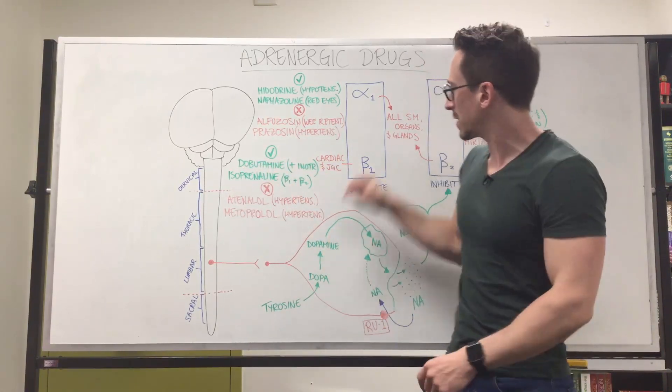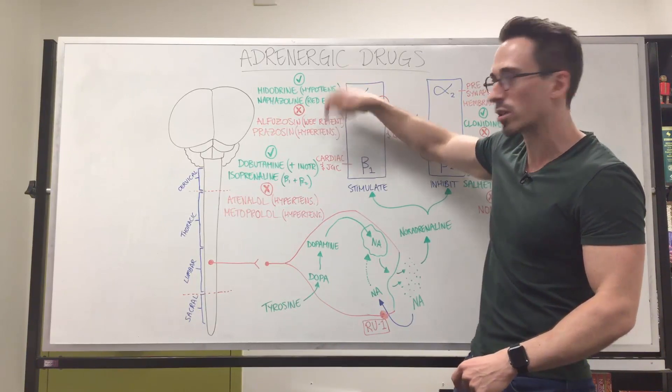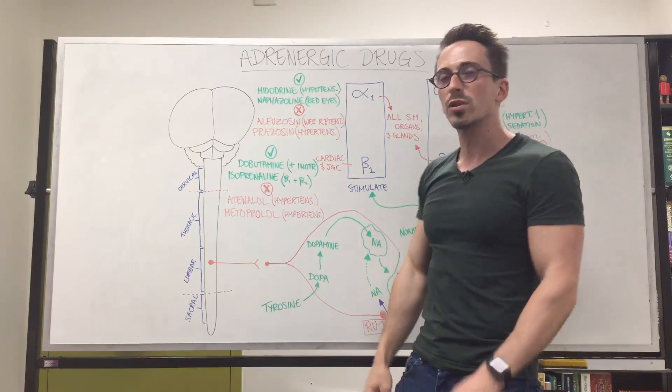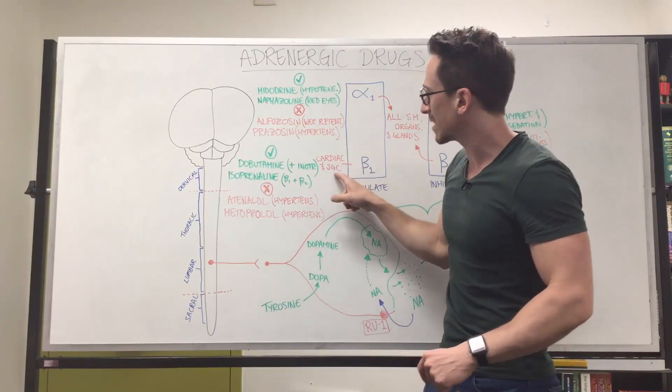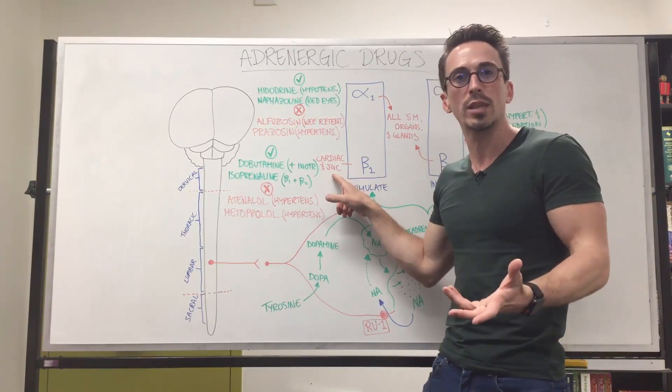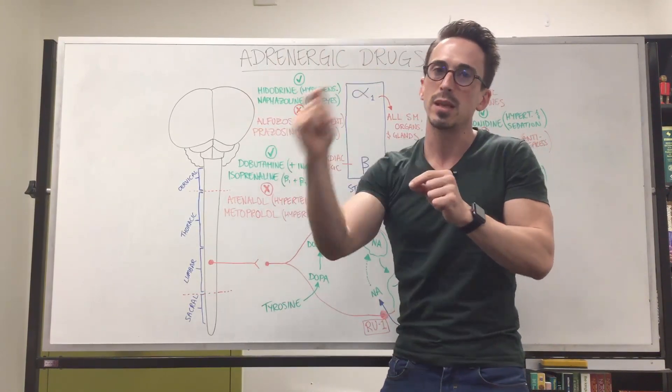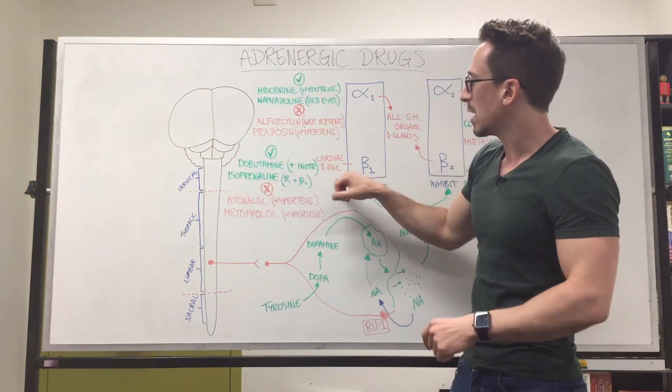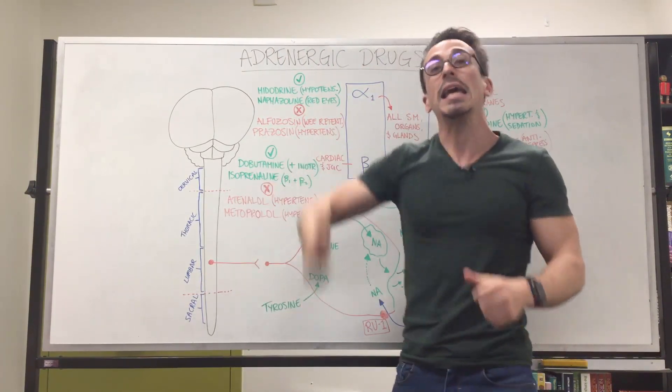Dobutamine, again, if it stimulates beta-1 receptors, it's going to stimulate heart muscle cells to contract and therefore it in itself is a positive inotropic drug. It's also a selective beta-1. So it only works on the cardiac muscle cells and those cells of the juxtaglomerular apparatus. You're thinking, what the hell is that? This is part of your kidneys that releases a molecule called renin, and renin stimulates you to have high blood pressure. So that means it helps, if you stimulate it, helps increase the contractile force of the heart, increasing blood pressure.